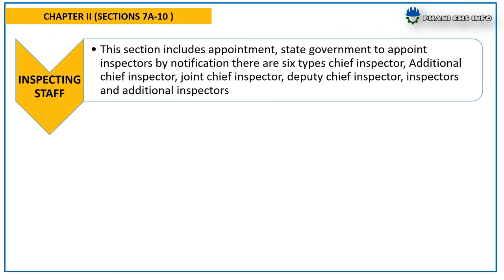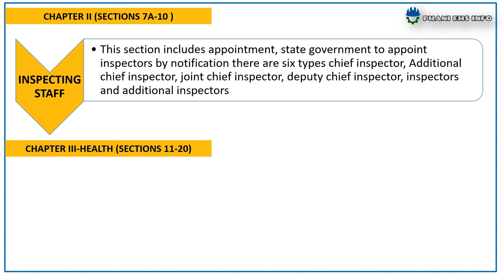Chapter 2, The Inspecting Staff, covers sections 7 to 10. This section includes the appointment of inspectors by the State Government by notification. There are 6 types: Chief Inspector, Additional Chief Inspector, Joint Chief Inspector, Deputy Chief Inspector, Inspectors, and Additional Inspectors.